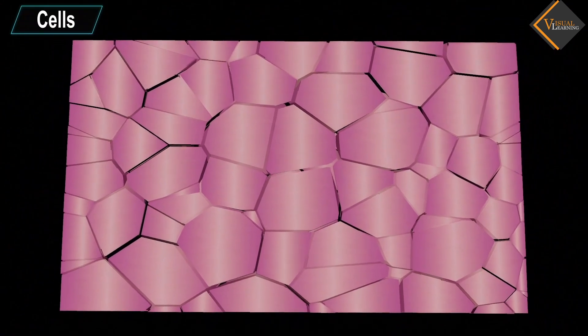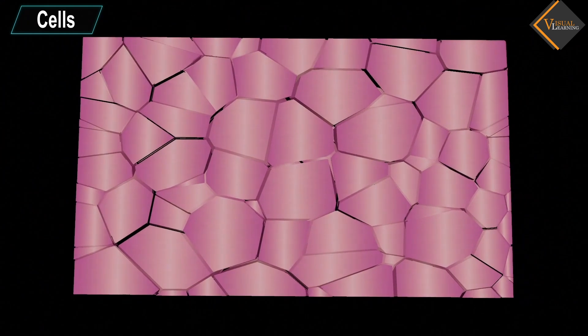Not only onion but all organisms that we observe around are made up of cells.